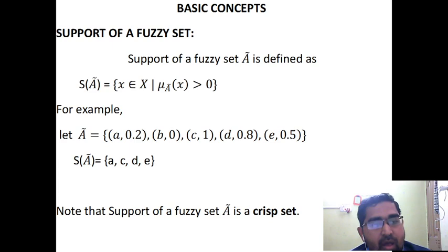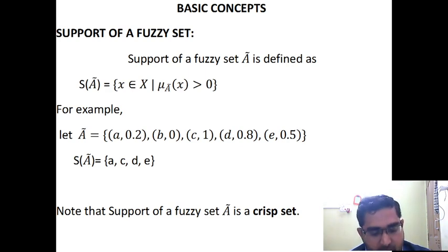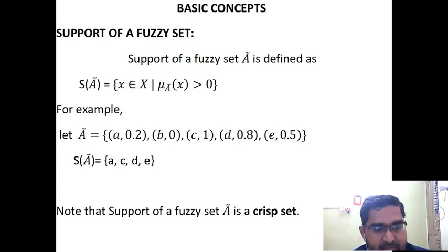Take an example. We are defining A = {(a, 0.2), (b, 0), (c, 1), (d, 0.8), (e, 0.5)}. Now, what is the support of A? In the support of a Fuzzy Set, we consider only those elements that have a membership value greater than 0. So in this Fuzzy Set, only a, c, d, and e qualify, because b has membership value 0. So S(A) = {a, c, d, e}.